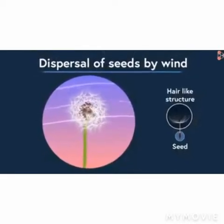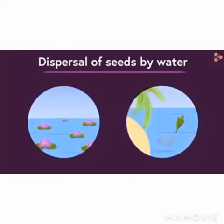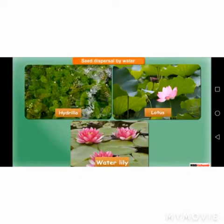Next is dispersal of seeds by water. The seeds of those plants will be dispersed that grow near coastal areas or are aquatic plants, like coconut, lotus, and water lily.